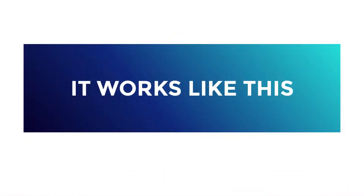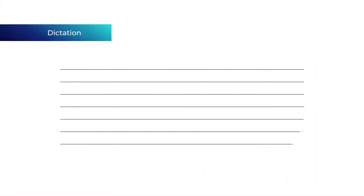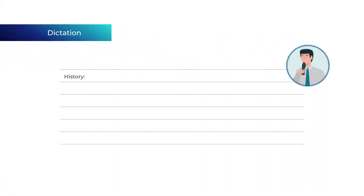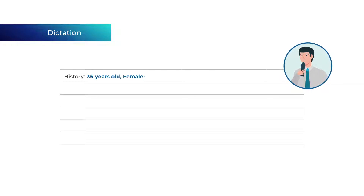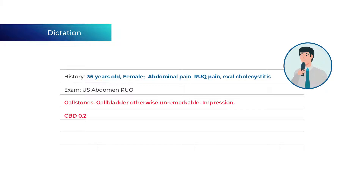It works like this. RScripter uses a radiology-specific natural language processing, or NLP, engine that was custom-built to understand radiology reports. It places dictated text into the correct location in the radiology report and uses keywords to generate the impression section automatically.